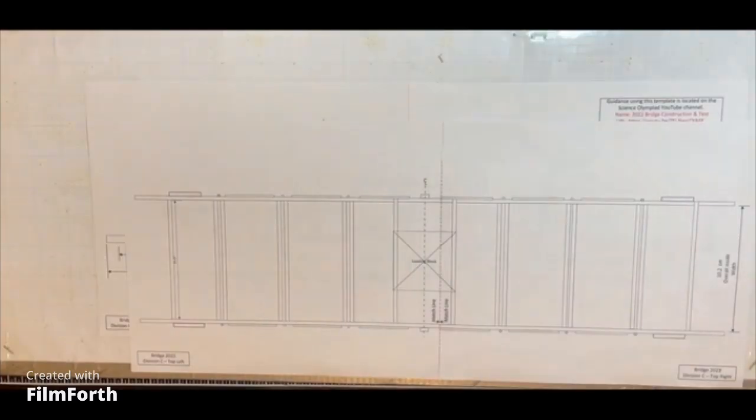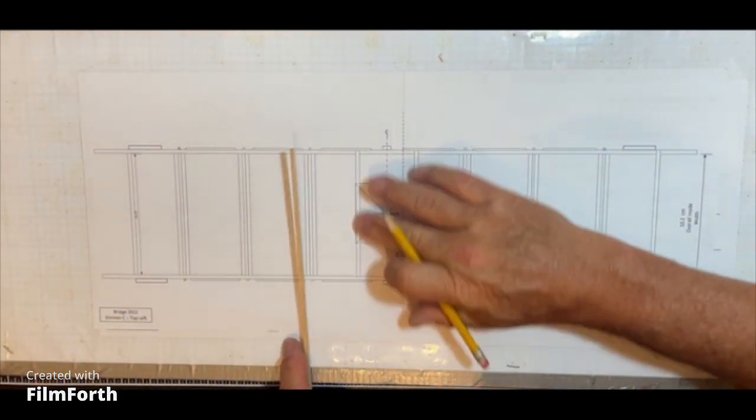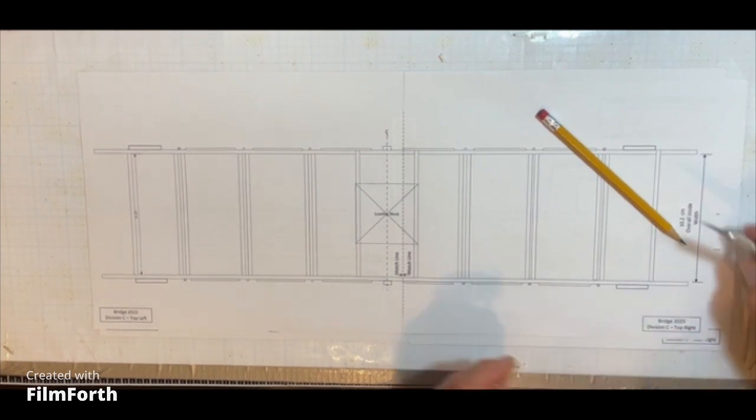All right, so now we're going to take the top view of the template and we're going to tape it down to the pinning board to get ready to do the cross members here. So first thing we're going to do is to make the two supports.